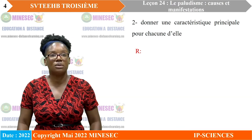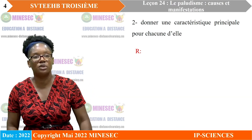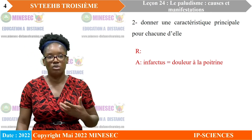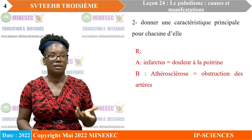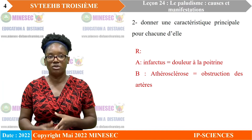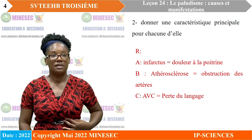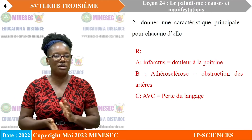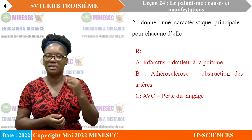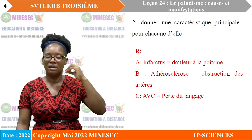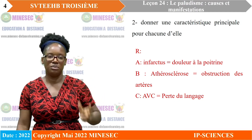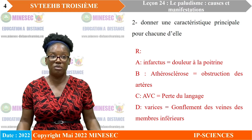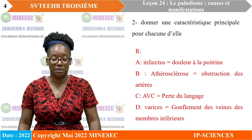Deuxième question : donnez une caractéristique principale pour chacune d'elles. L'infarctus se manifeste par une douleur à la poitrine. L'athérosclérose par l'obstruction des artères. Pour l'AVC, il y a plusieurs signes : on peut avoir la perte du langage, ou plus généralement une artère bouchée dans le cerveau. Ensuite, nous avons les varices et le gonflement des veines des membres inférieurs.